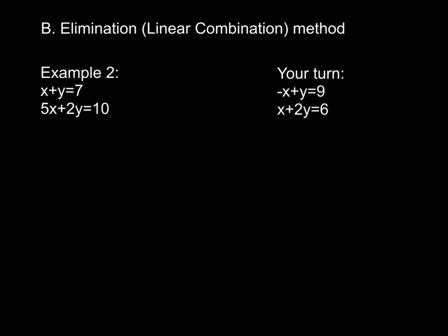Our second method for solving equations algebraically is the elimination or linear combination method. We multiply one or both equations — sometimes neither — then combine them to eliminate one of the variables. Looking at x plus y equals 7 and 5x plus 2y equals 10, I see both coefficients in the first equation are 1. So I have two options: multiply by negative 5 so the x coefficients are opposites, or multiply by negative 2 so the y coefficients are opposites.